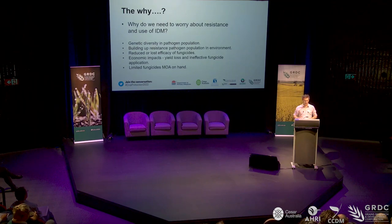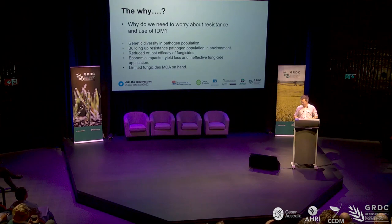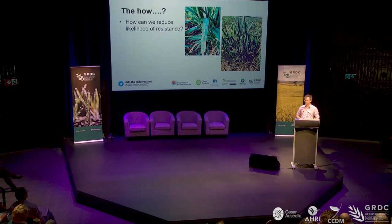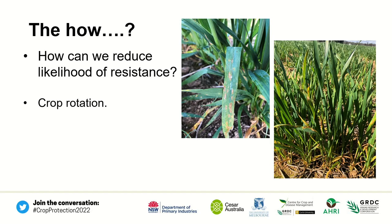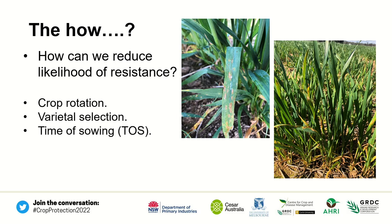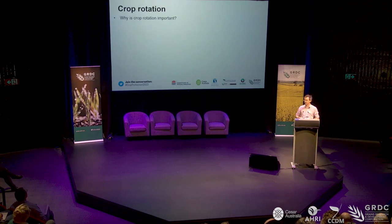As previously noted, we have limited modes of action, so we need to look after the ones that we have. The how — how can we reduce the likelihood of developing resistance to septoria and yellow leaf spot? We're going to discuss these in turn: crop rotation, varietal selection, time of sowing, stubble management, and fungicides as part of an integrated disease management package. Fungicides are still important, but it's the way we use them.